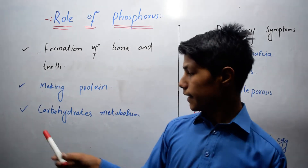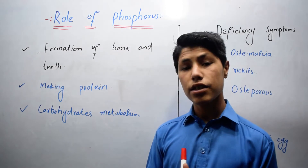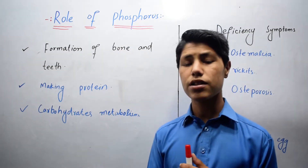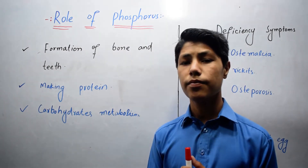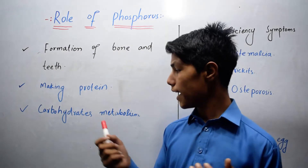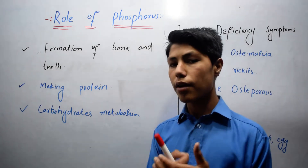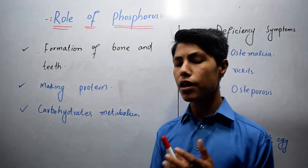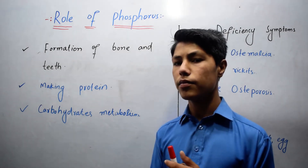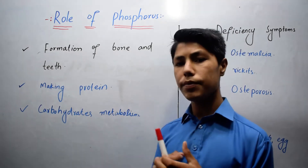And the last function is carbohydrate metabolism. Phosphorus helps in carbohydrate metabolism, breaking it down into smaller pieces.